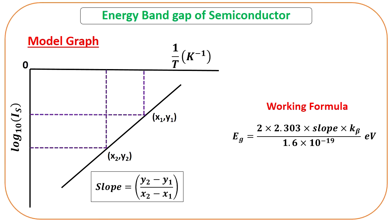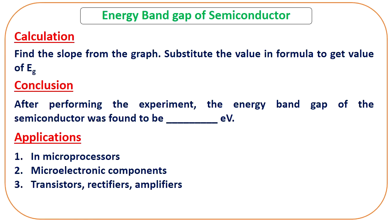In summary, from this experiment we obtained a temperature versus current plot, then plotted log₁₀ of the current versus 1/T to get a straight line. From the slope of that line, we calculated the energy band gap of the semiconductor. Knowing the exact value of a semiconductor's band gap allows us to apply it in different applications like solar cells, LEDs, and other semiconductor devices.